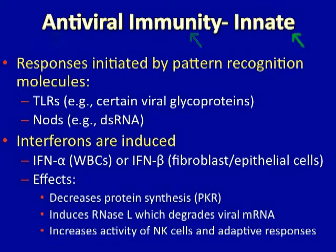Beginning with the innate immune system, there are pattern recognition molecules that respond to certain viral elements. The toll-like receptors on the surface of some cells will respond to certain viral glycoproteins. In addition, there are intracellular molecules such as NODs that recognize unusual conformations of nucleic acids, such as double-stranded RNA, which does not exist in a human being.